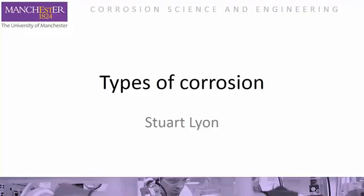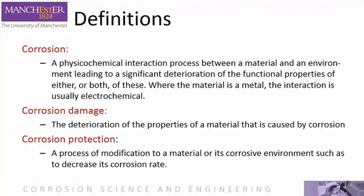Before we start, let's look at some definitions. Formally, corrosion is the physical-chemical interaction process or mechanism that results in damage to a material. Corrosion damage is the result of a corrosion process, and corrosion protection is how we can modify the system to reduce the corrosion damage.